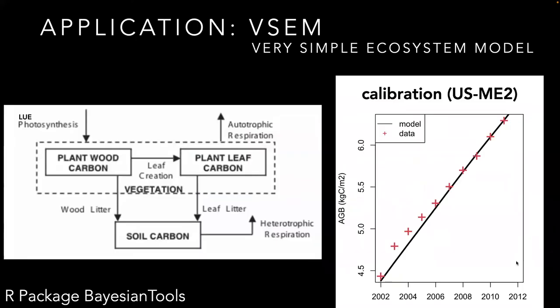To test our assimilation, we applied it to forecasts made using the very simple ecosystem model embedded in the Bayesian tools R package for both simulated and real-world data. For applications to real-world data, this model is calibrated against annual AGB, LAI, and NEE data from the Metolius Ameriflux site US-ME2, a mature ponderosa pine stand in Oregon.